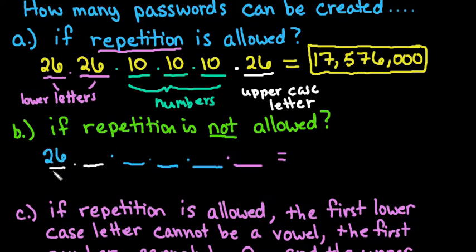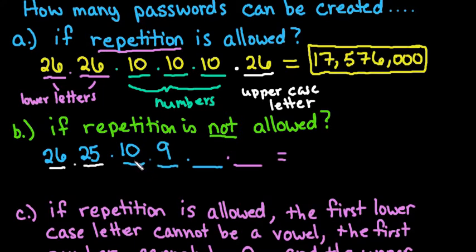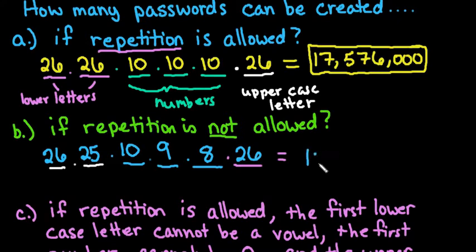We fill in our blanks: 26 letters for the first position, but now that I've used one letter I'm down to 25 for the second. For the digits, I have 10 choices for the first number, but only 9 for the next — if I already used five I can't use it again — and then 8 for the third digit. For the uppercase letter, we have all 26 since no uppercase letters have been used yet.